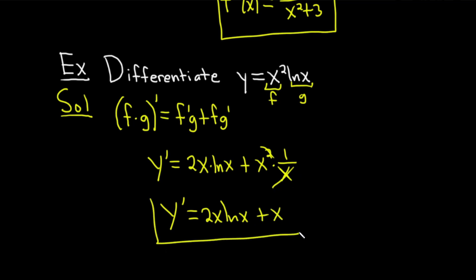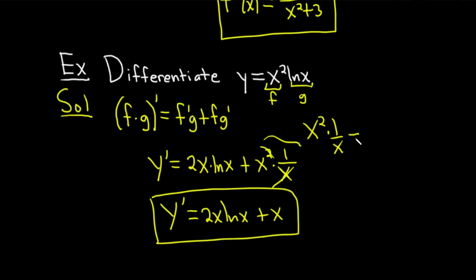And that would be the solution. If that was unclear: it was x squared times 1 over x, which equals x because the x on the bottom cancels with one of the x's on the top.